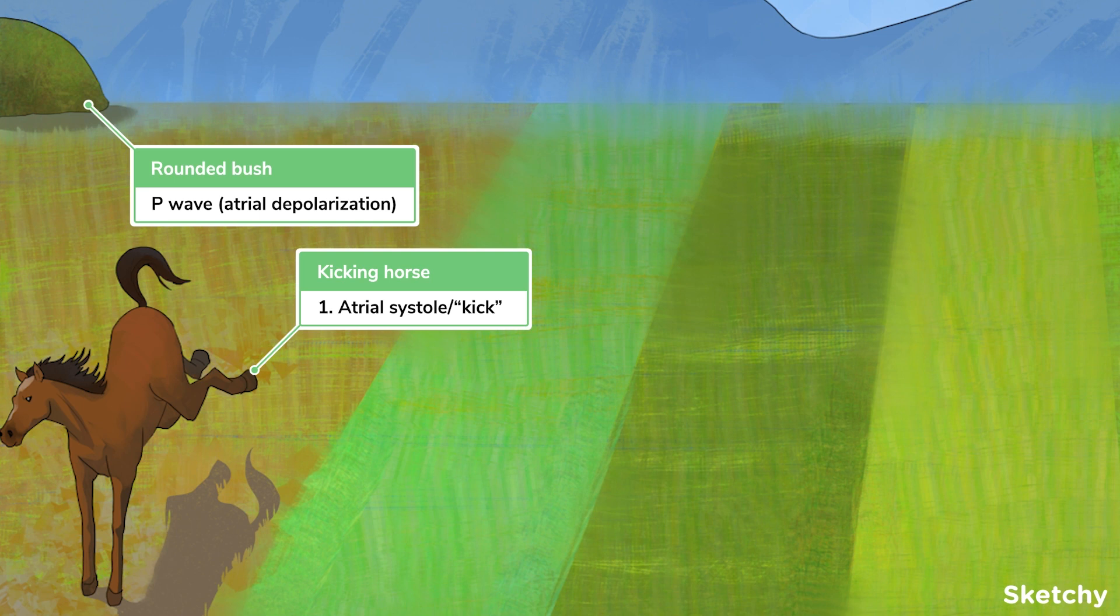Note, going forward, each part of the ECG will be illustrated on this horizon line. This depolarization is translated into atrial contraction, which causes atrial pressure to rise and blood to be forced through the AV valves into the ventricles. This is sometimes referred to as the atrial kick, hence this kicking horse, and represents the final phase of ventricular filling, which corresponds with a slight increase in ventricular volume.